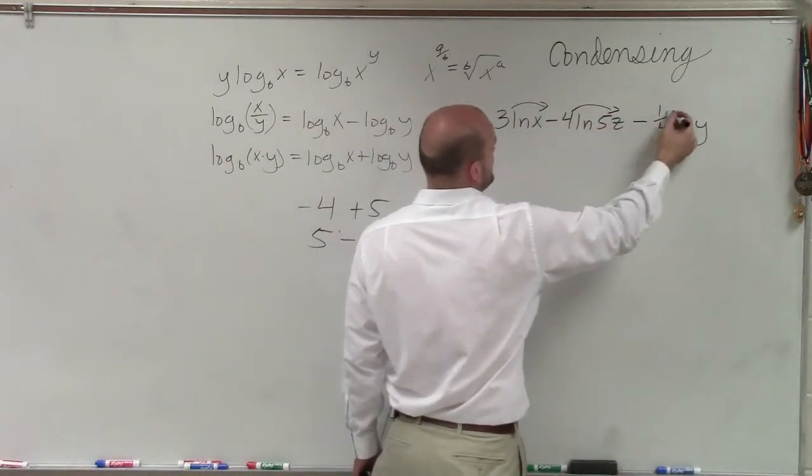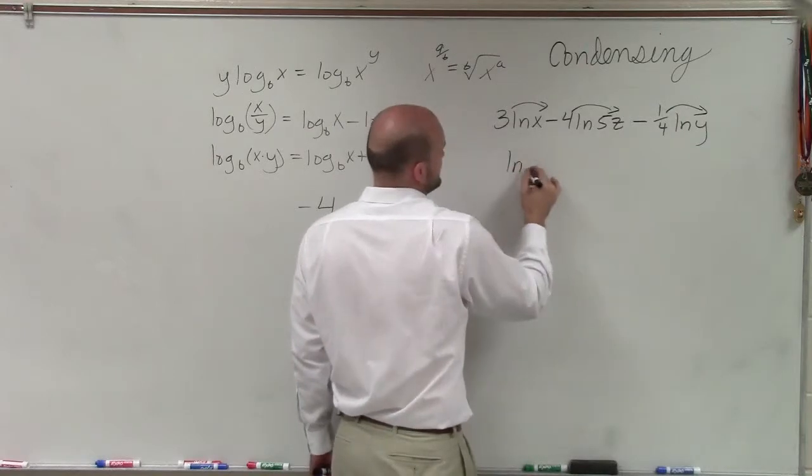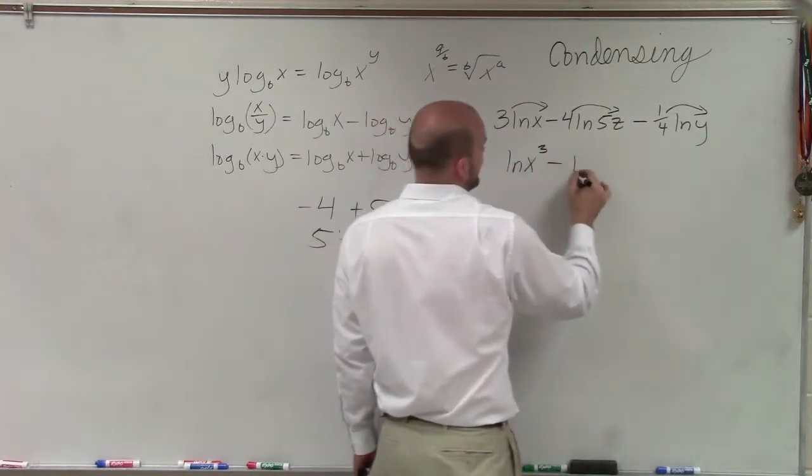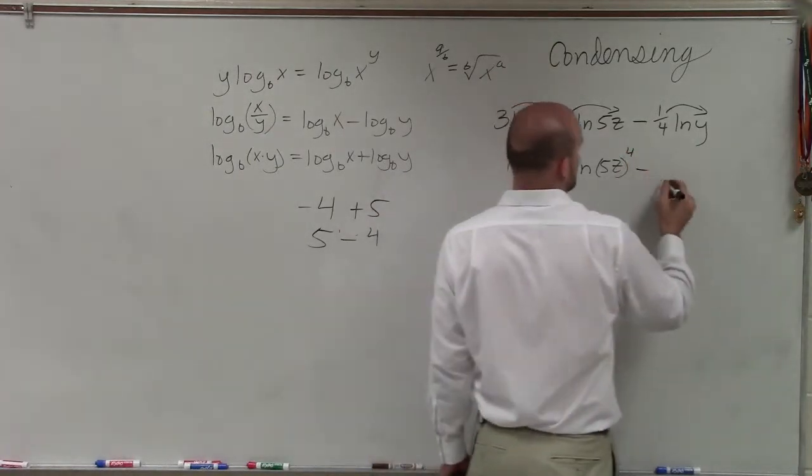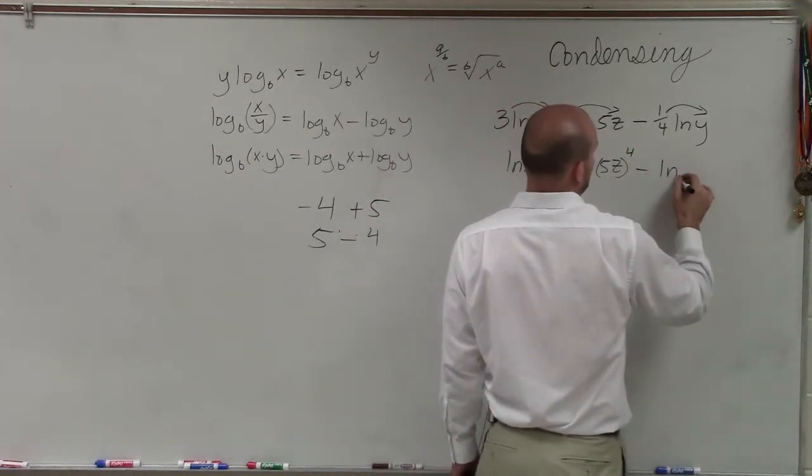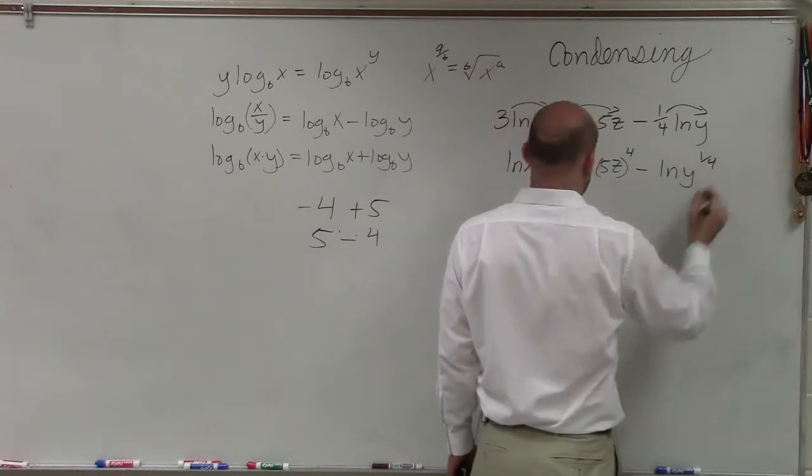So I'm going to take all these terms. I'm going to rewrite this as ln of x to the third power minus ln of 5z raised to the fourth minus ln of y to the 1 fourth power.